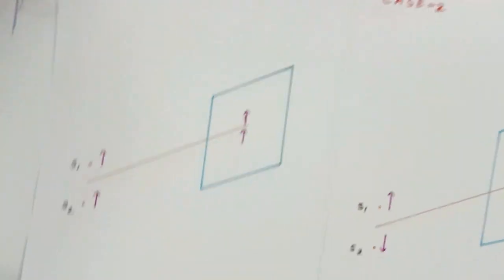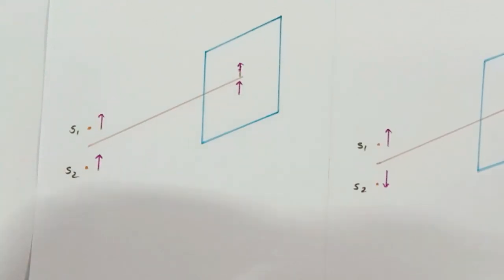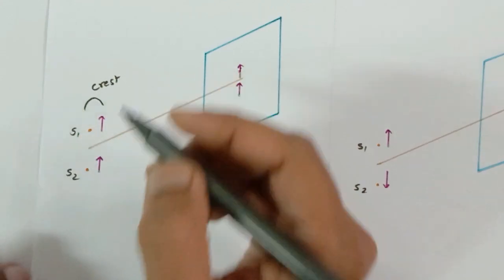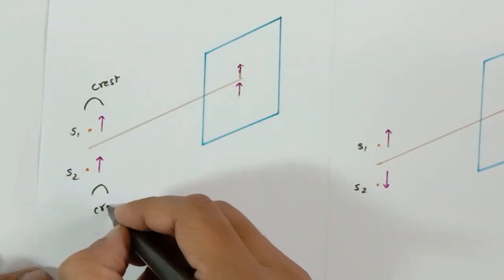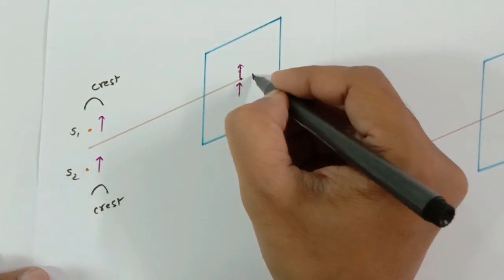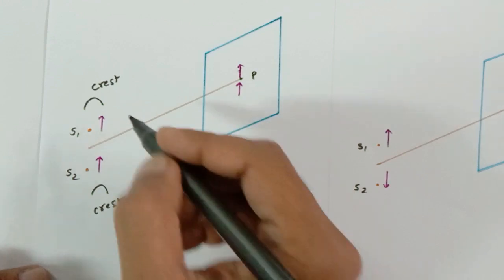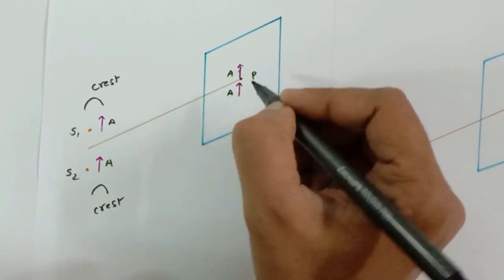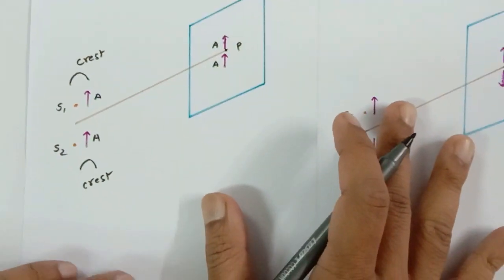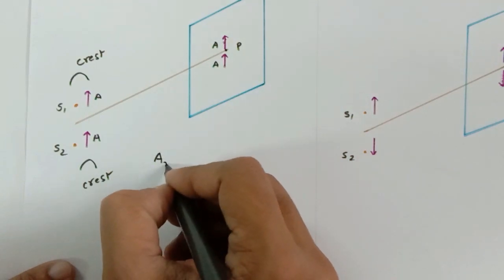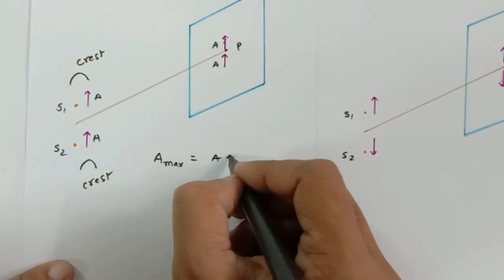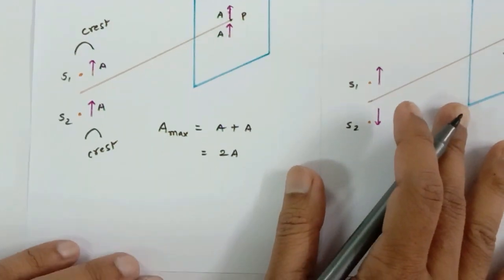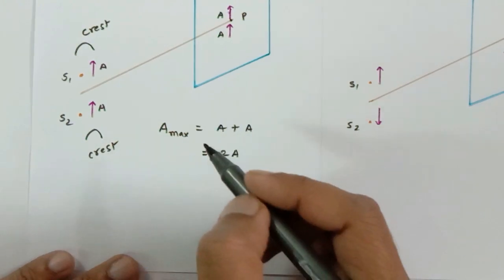I would like to show you a few diagrams. This is Case 1: the crest of one wave is falling on the crest of the other wave at point P on the screen. The amplitude vectors are directly adding up, so we will get maximum amplitude — that would be a plus a, which is twice 'a'.